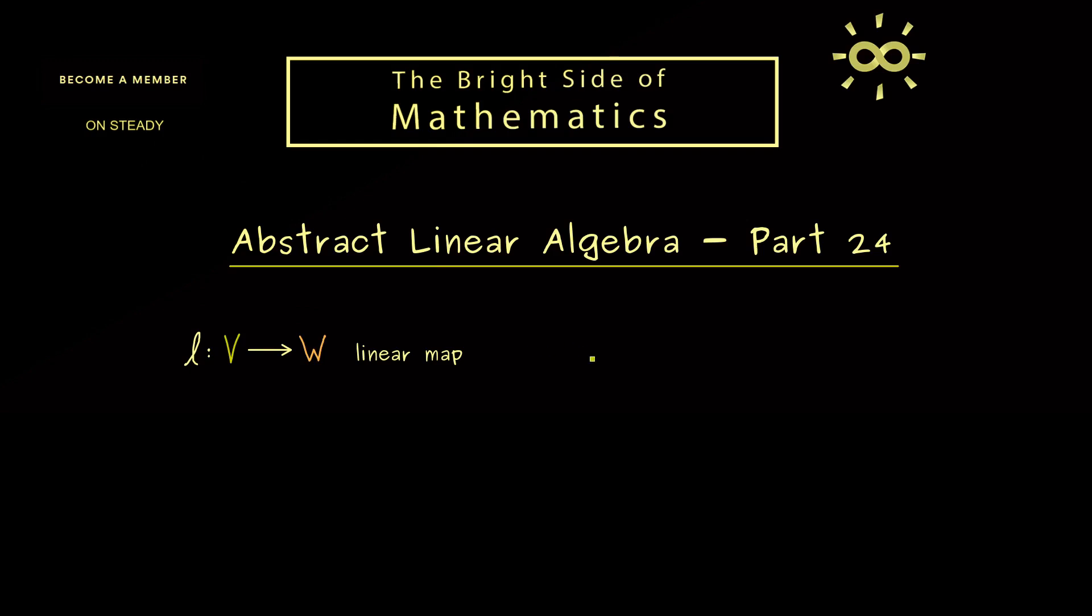Ok, then let's immediately start and we already know a linear map L acts between two vector spaces V and W.